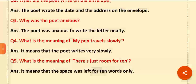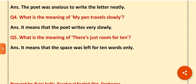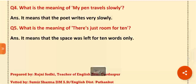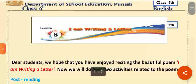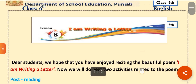Next question — Why was the poet anxious? The poet was anxious to write neatly and clearly. The poet wanted to write the letter neatly. Next — what is the meaning of 'there is just room for ten'? 'Room' means space (jaga). It means that the space left was enough for ten words only. So children, prepare the question answers and make sentences nicely, and complete everything in your book.